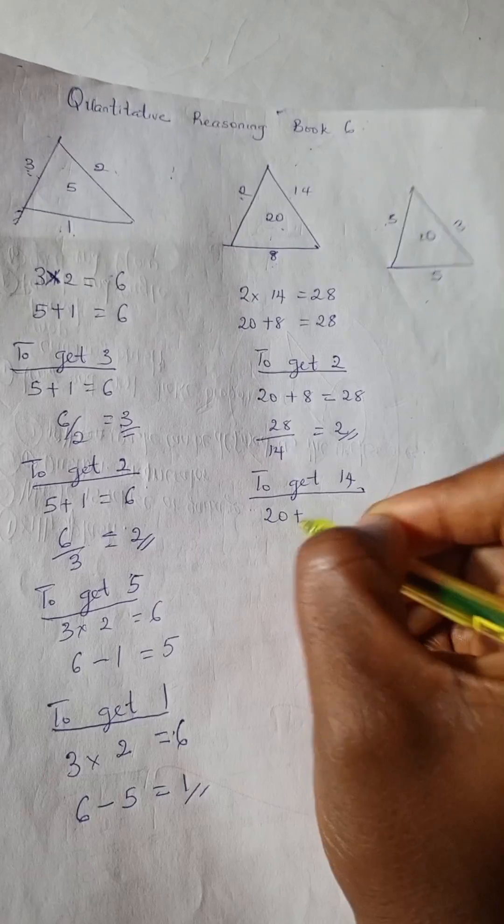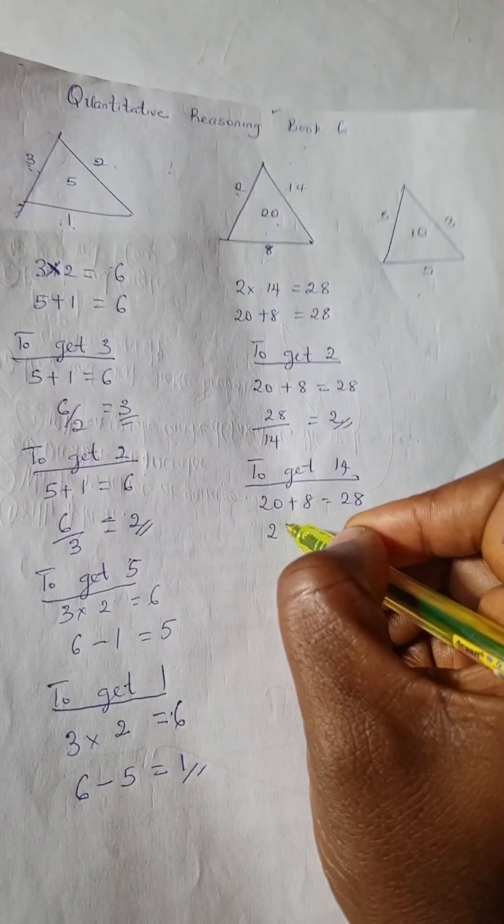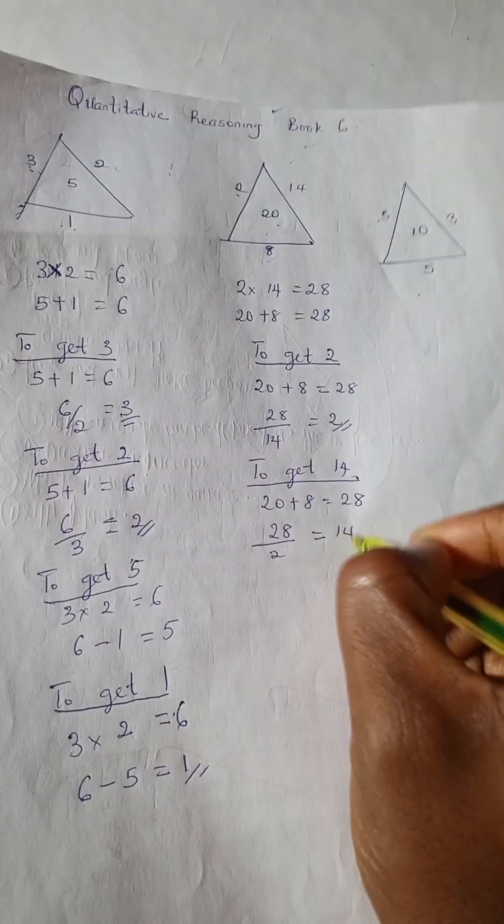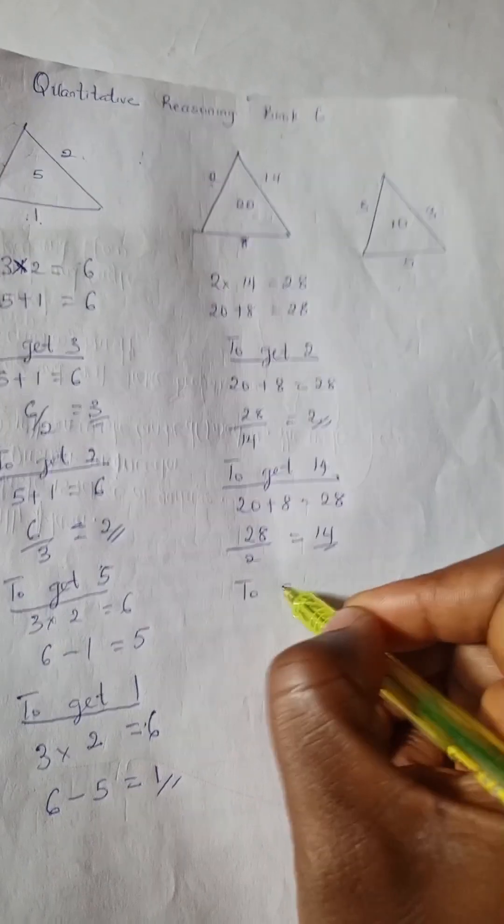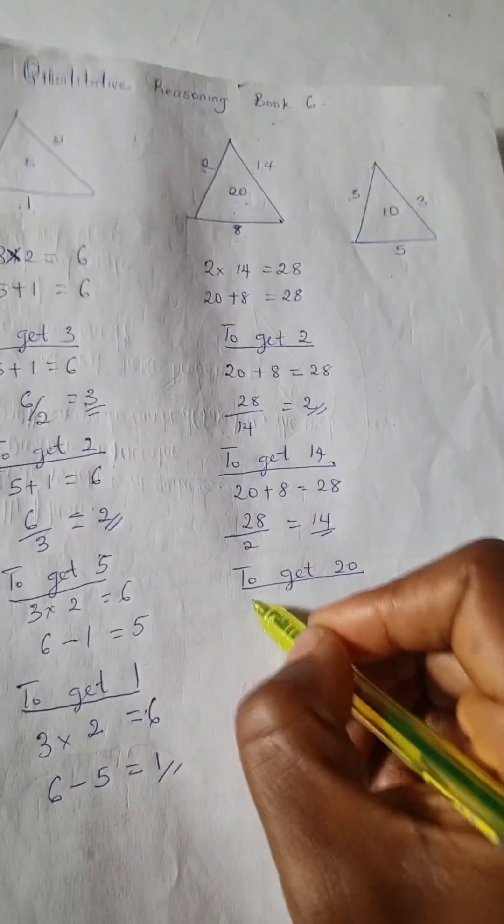To get 14, we have 20 plus 8 is 28, and then 28 divided by 2 is 14. To get 20...